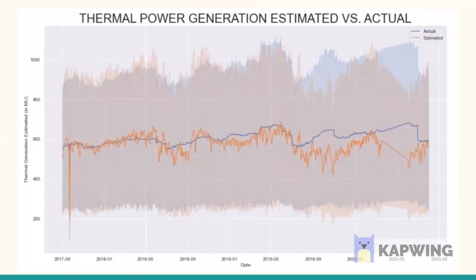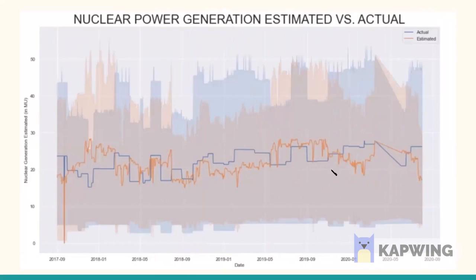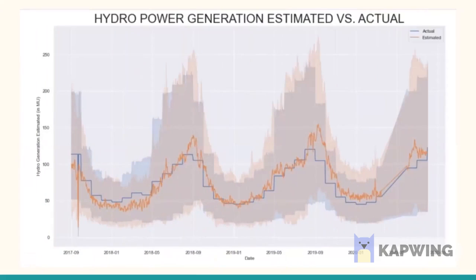This graph shows thermal power generation estimated versus actual values. This graph represents nuclear power generation estimated versus actual, and the last graph represents hydro power generation estimated versus actual.